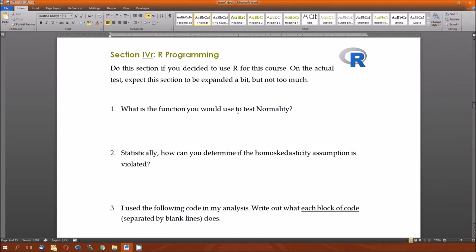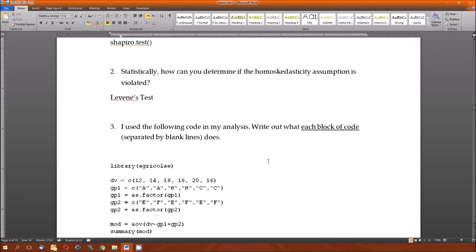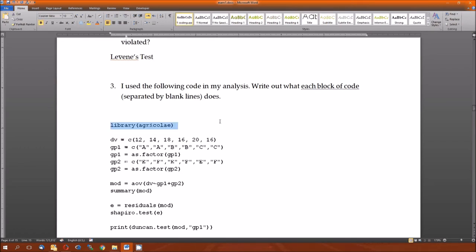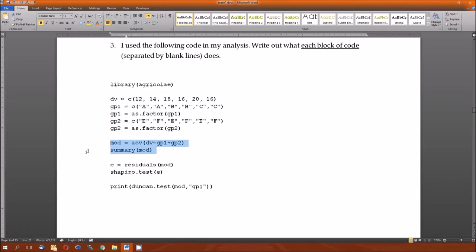Okay, section 4, this is for the R people. A function to use to test normality is shapiro.test. That's the function. Statistically, you would use Levene's test. There's an E there. Levene's test. Now, what does each block of code do? That first block imports or loads the agricolae package. The next block imports the data or reads the data into memory. The third block fits the model with a two-way analysis of variance additive model and then provides the ANOVA table. The third block tests the normality of the residuals. And the final block performs the Duncan's multiple range test on the group 1 variable.